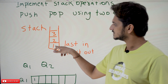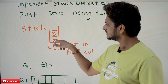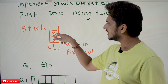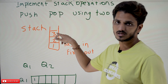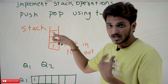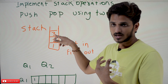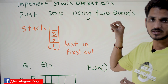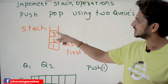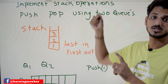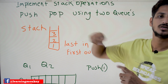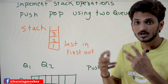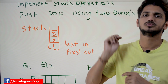The first inserted element is one, second inserted element is two, third inserted element is three. If you want to pop an element from the stack, what should be popped first? You have to pop three first because it is the last inserted. This logic should be implemented using two queues.